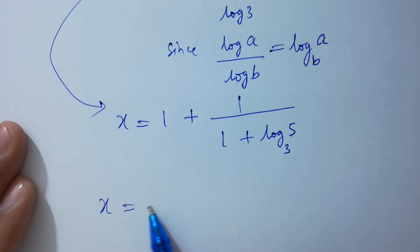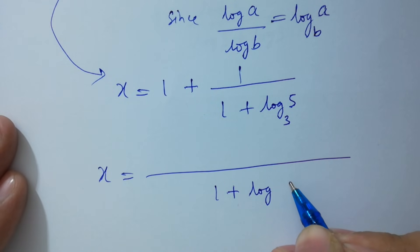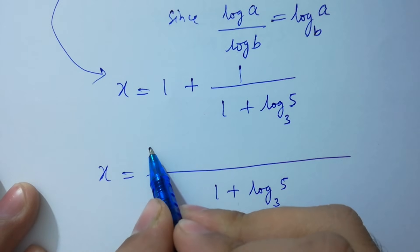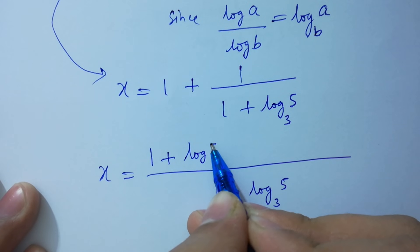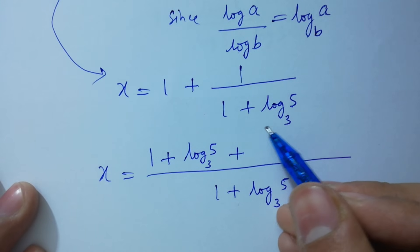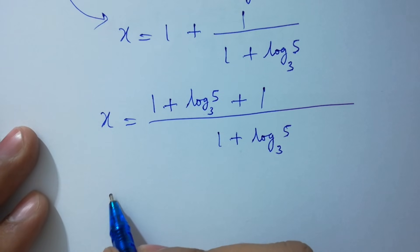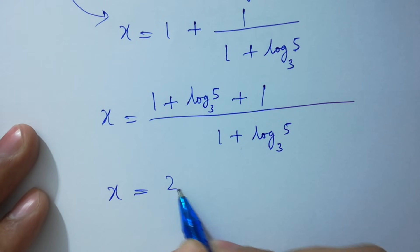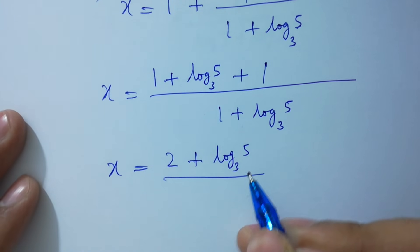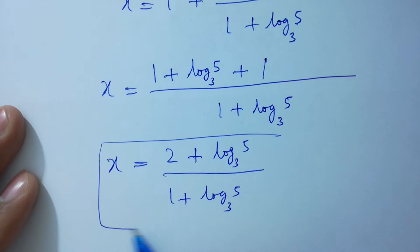Now take LCM here: 1 plus log 5 to the base 3, times 1, over 1 plus log 5 to the base 3, plus 1 over 1 plus log 5 to the base 3. We have x equal to 1 plus 1, giving 2 plus log 5 to the base 3 over 1 plus log 5 to the base 3. This is our final answer, the value of x.